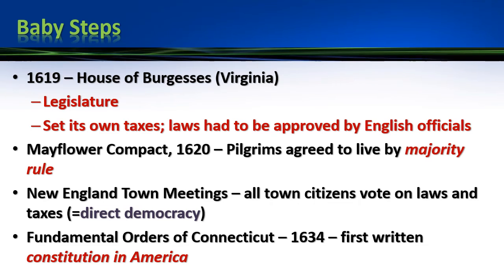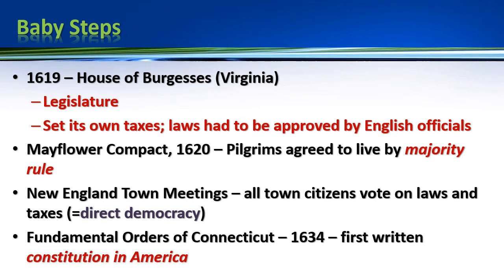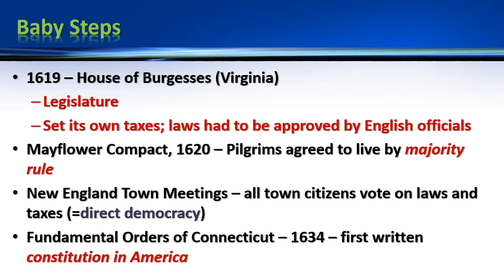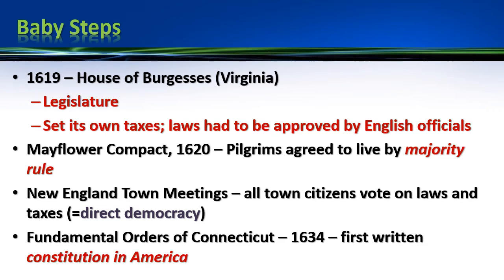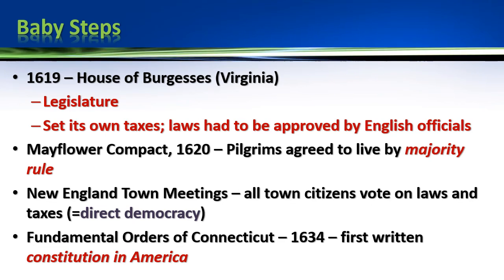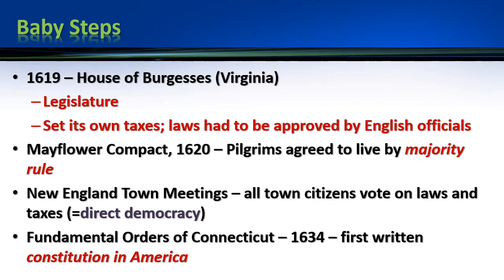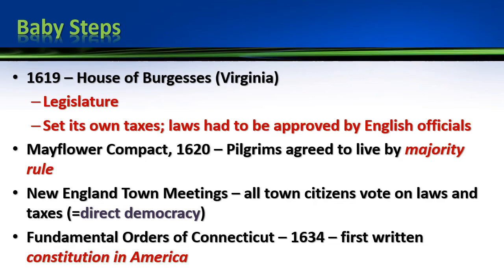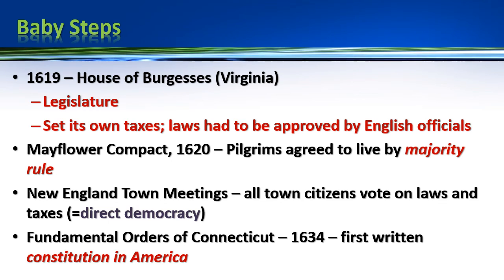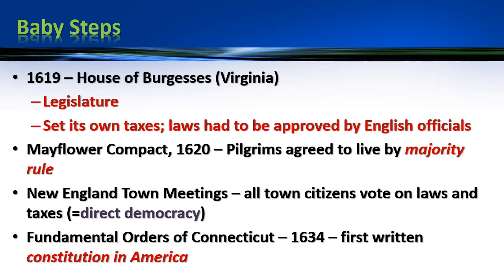Another significant baby step is in 1634 in Connecticut. Connecticut is founded by a Puritan who gets driven out because the Puritans don't like him and his beliefs. He wants to create another Puritan colony under the way he wants to operate. They decide in Connecticut in 1634 to write a constitution. This is actually pretty significant because the English don't even have a written constitution — the English constitution is unwritten. It's tradition, custom, court decisions. But in Connecticut, they sit down and write down exactly how their government is going to operate, which is a pretty big shift.